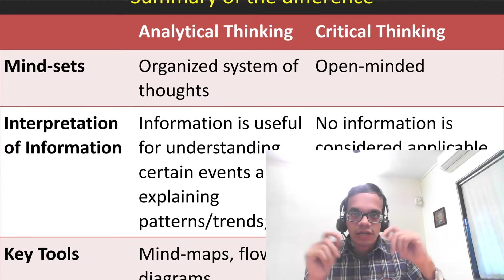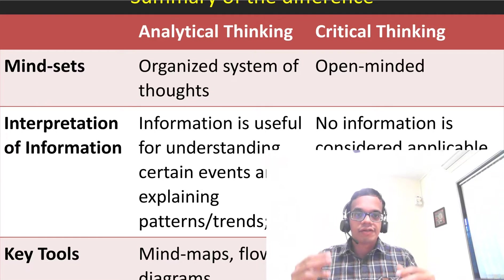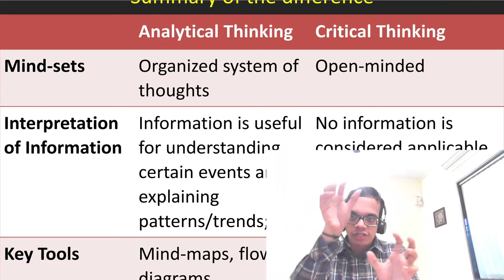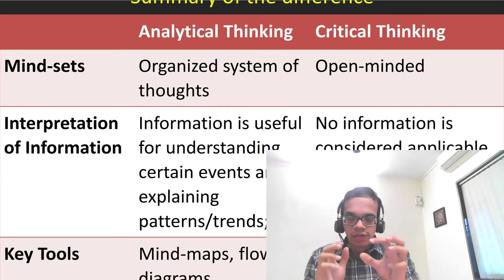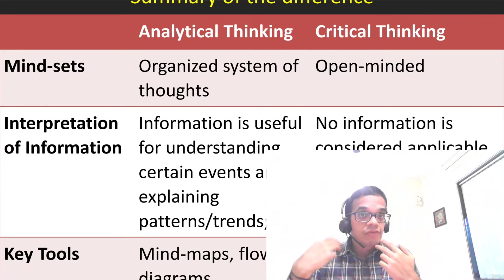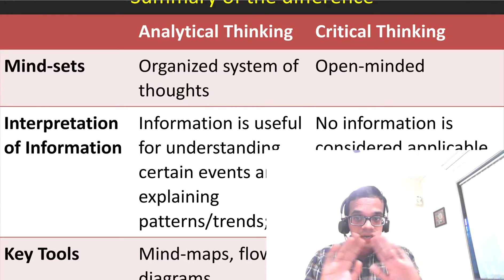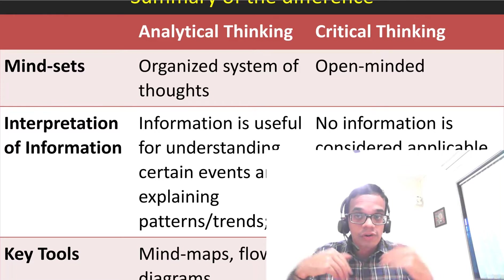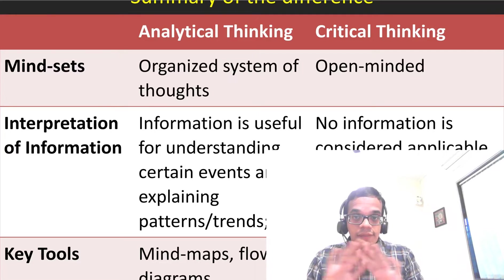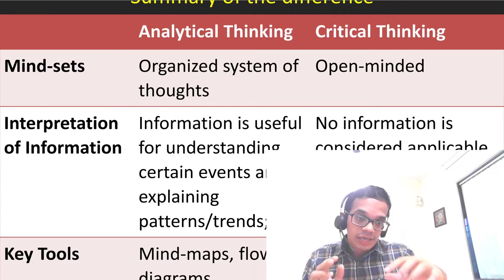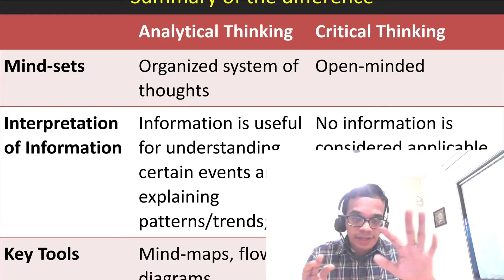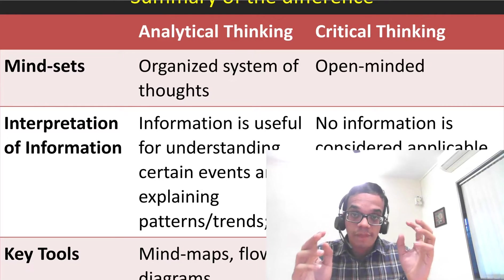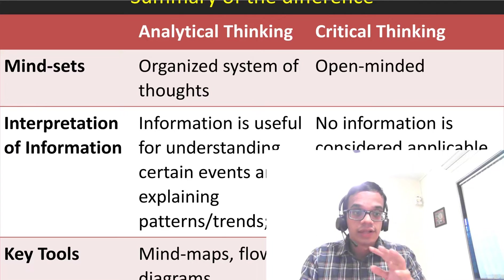In analytical thinking, we interpret information to understand certain events and explain patterns and trends. We arrange thinking to ask what can happen, how it can happen, and when it can happen. In critical thinking, nothing is considered applicable without critical evidence. Analytical thinking also gives weight and measure — for example, 25 to 35 percent of users contribute this way — which doesn't happen in critical thinking.